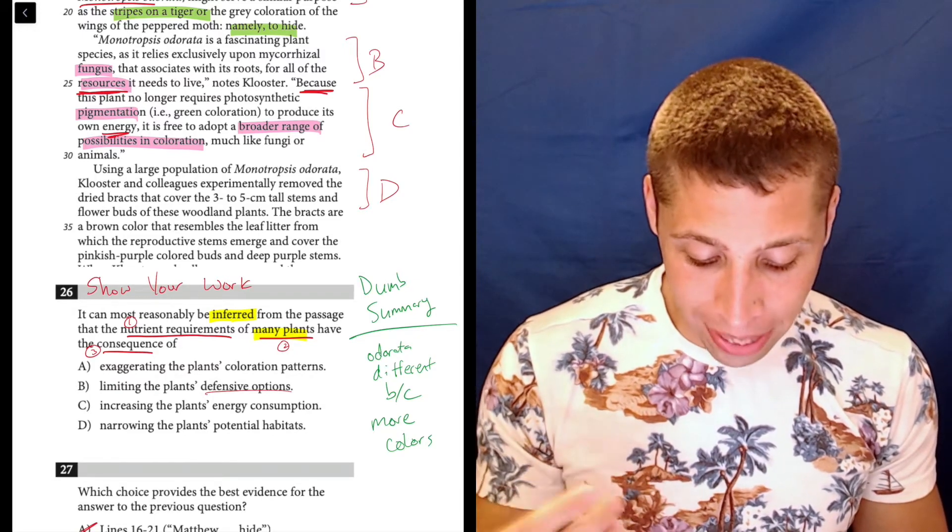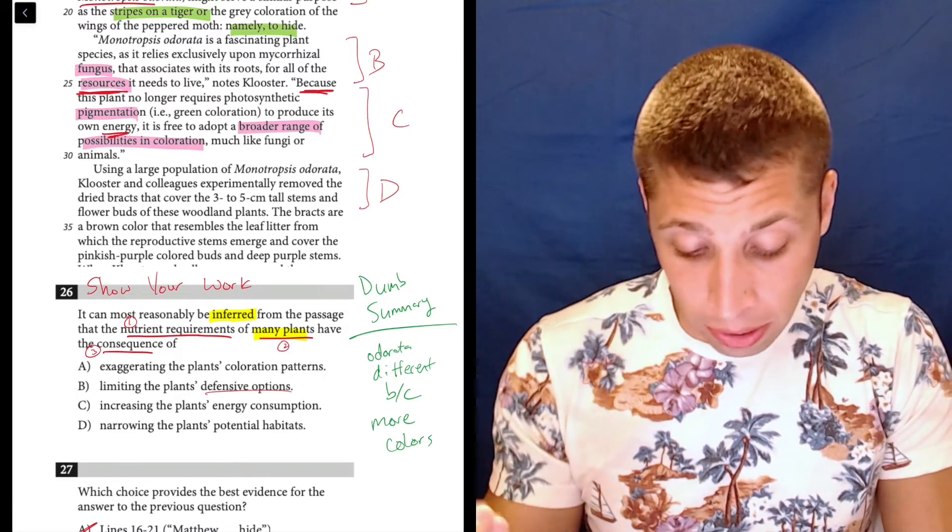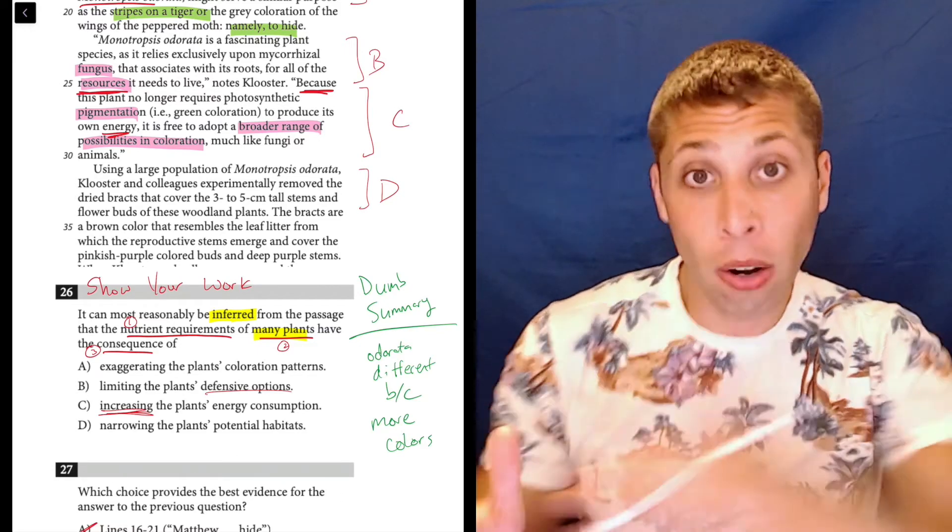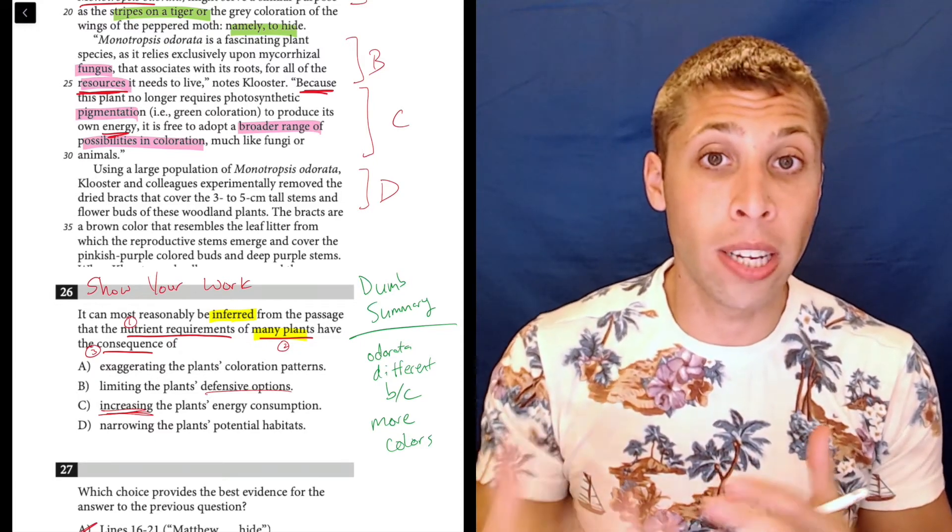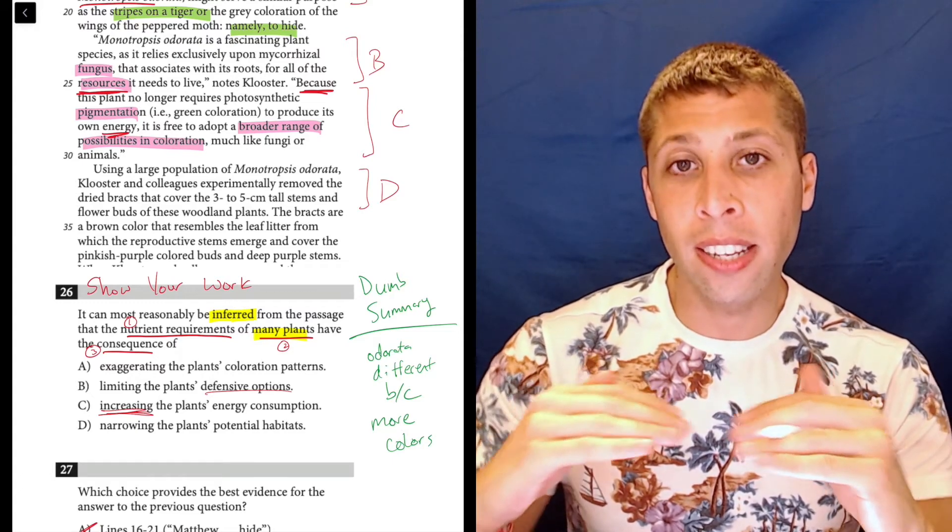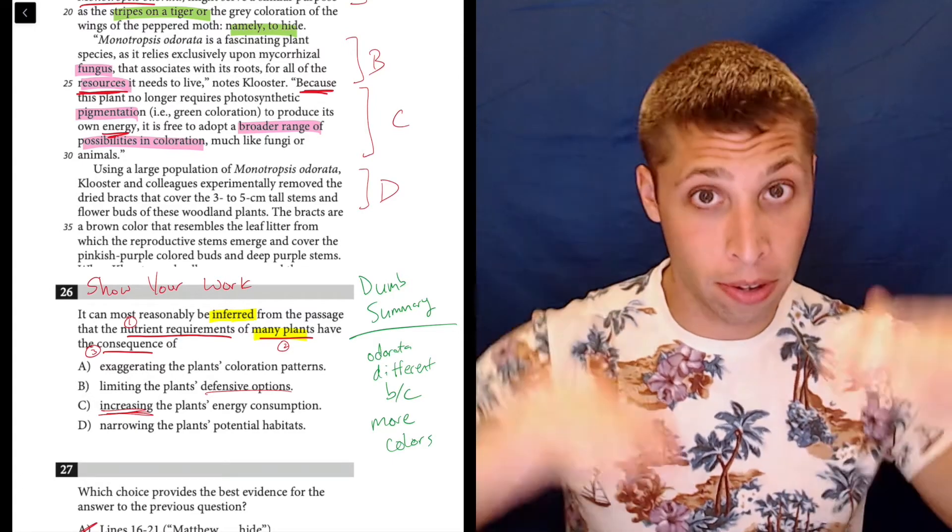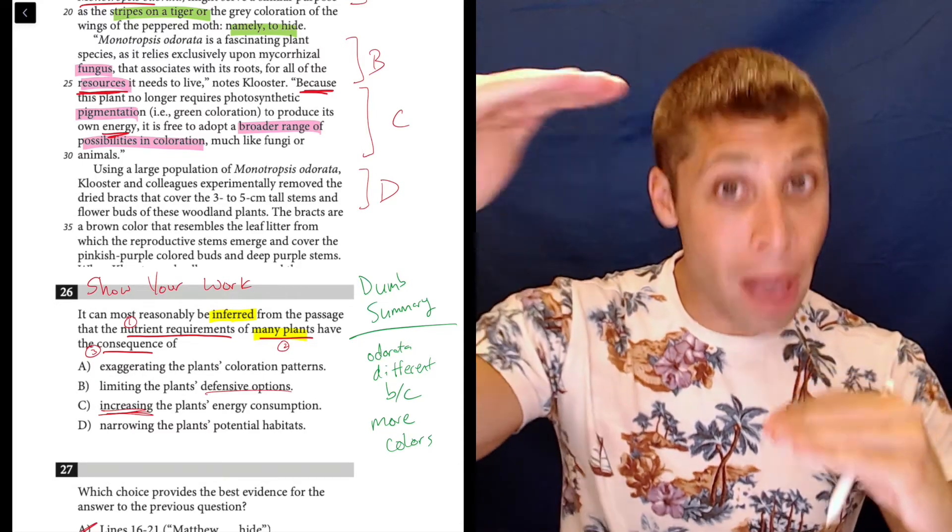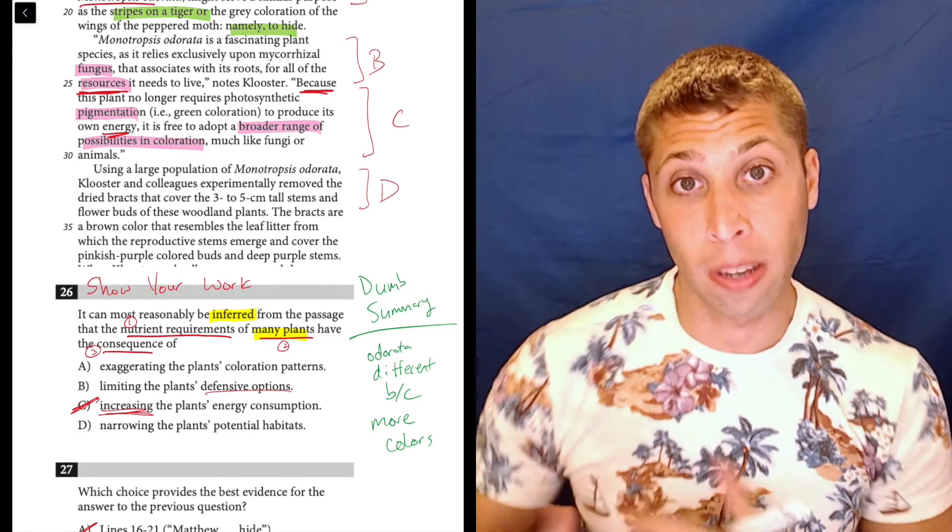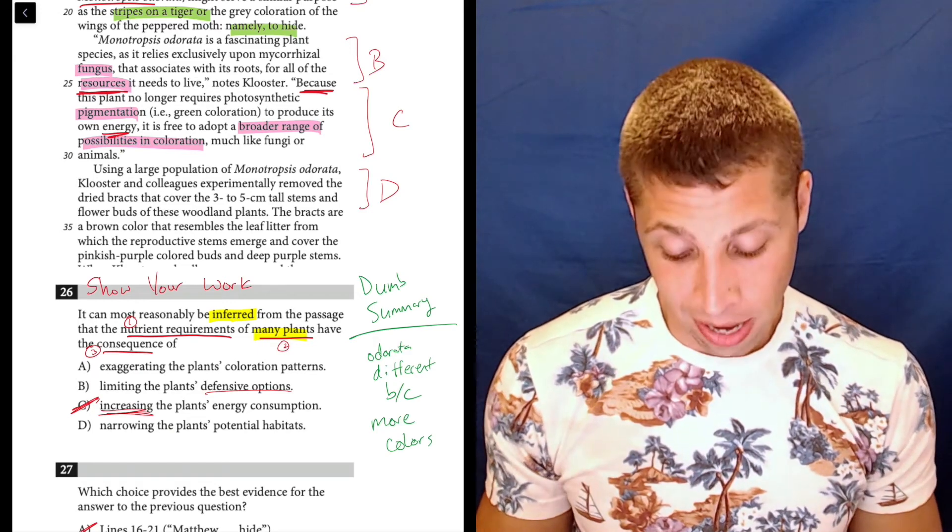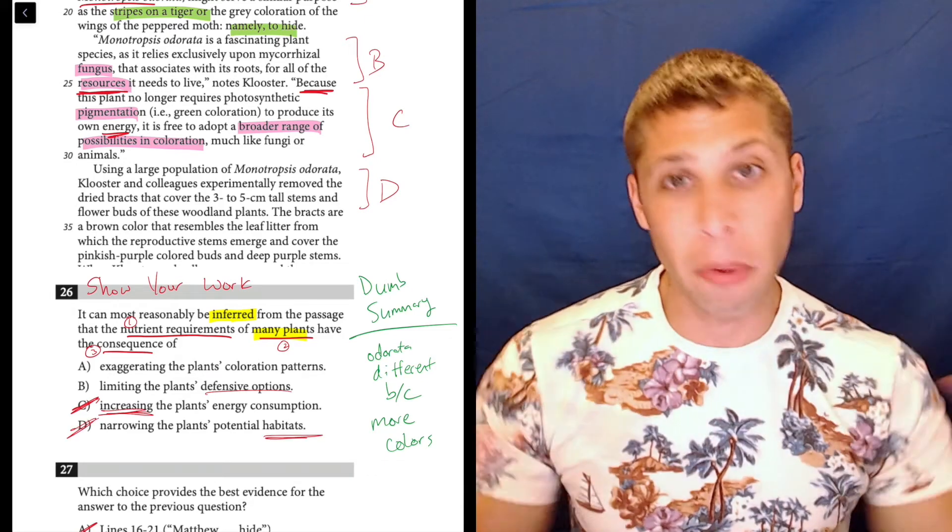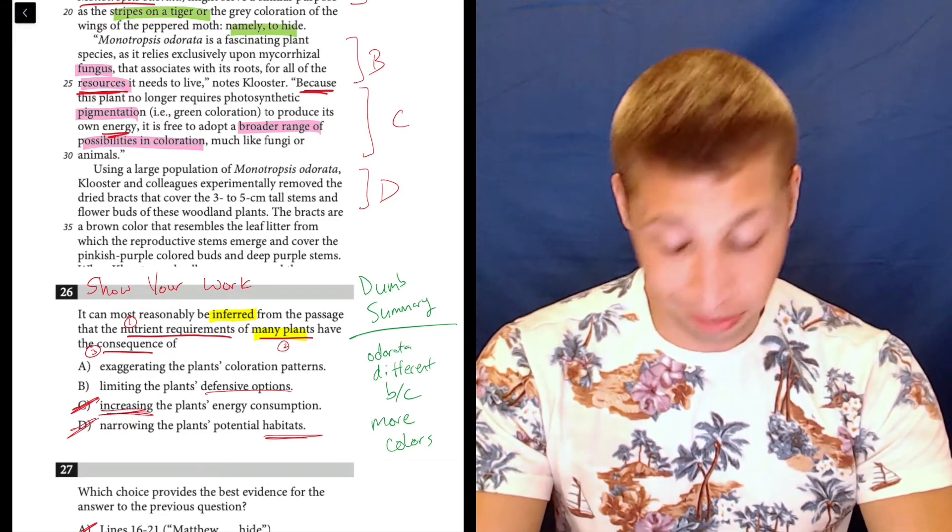The nutrient requirements increase the plant's energy consumption. So they do talk about energy, resources, things like that. But are they really comparing the consumption of energy between this one odorata plant and all the other plants? They're not saying one has more or uses more energy, uses less energy. It's just a different way of getting energy. And this is some classic SAT thinking here. They want us to see a difference as some sort of ranking. One is better than another. But we have to be careful. That's not what is said. They're not saying one is better. They are just saying that they are different. So we can't talk about this as something having increased energy consumption. Choice D, narrowing the plant's potential habitats. Well, here's one I'm pretty sure it's just never talked about. They're never talking about where plants live. So that's gone. So now we come back to this A and B choice here. I'm just going to skip to the answer.